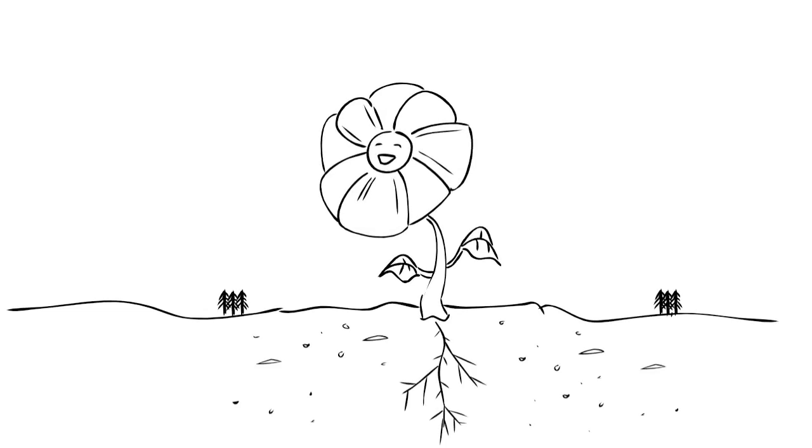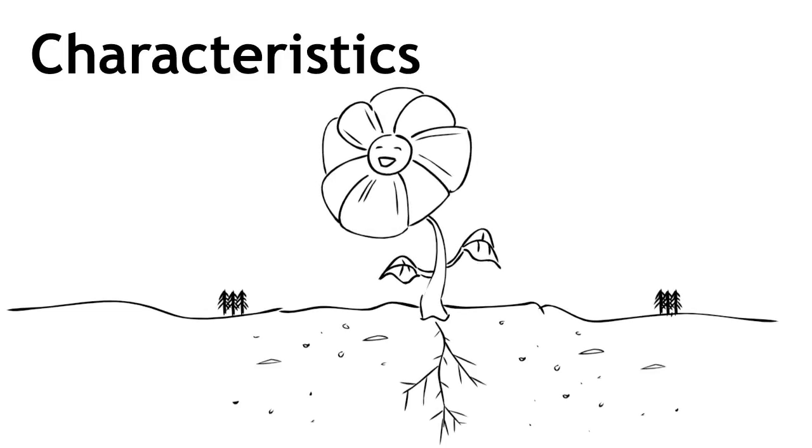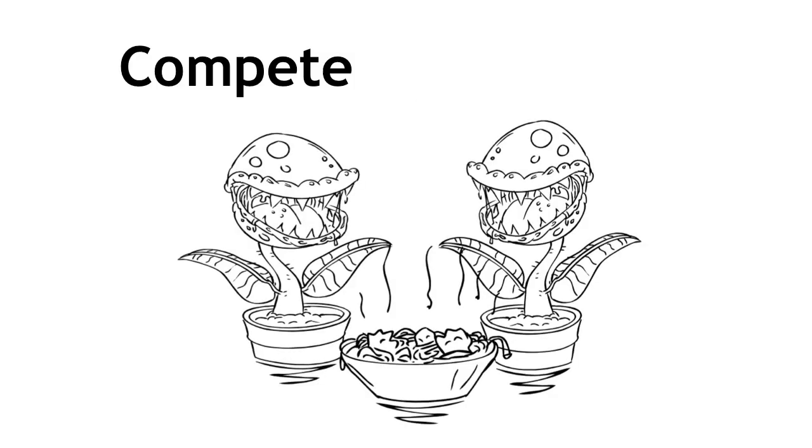An adaptation is a characteristic which helps an organism to survive in its environment. Plants and animals must adapt so that they can compete for resources and live successfully in their habitat.